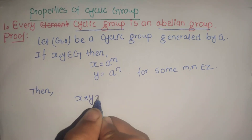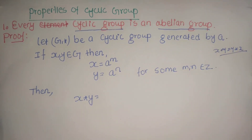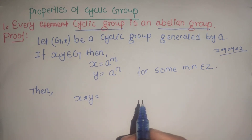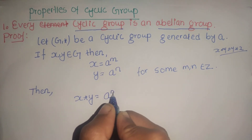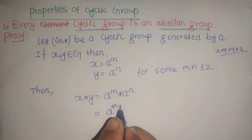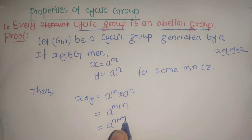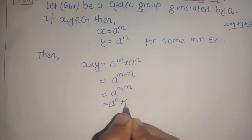Then x★y = a^m ★ a^n = a^(m+n). Since m+n = n+m by the commutative property of integers, we get a^(n+m). And we already know that a^m ★ a^n = a^(m+n), so a^n ★ a^m = a^(n+m).